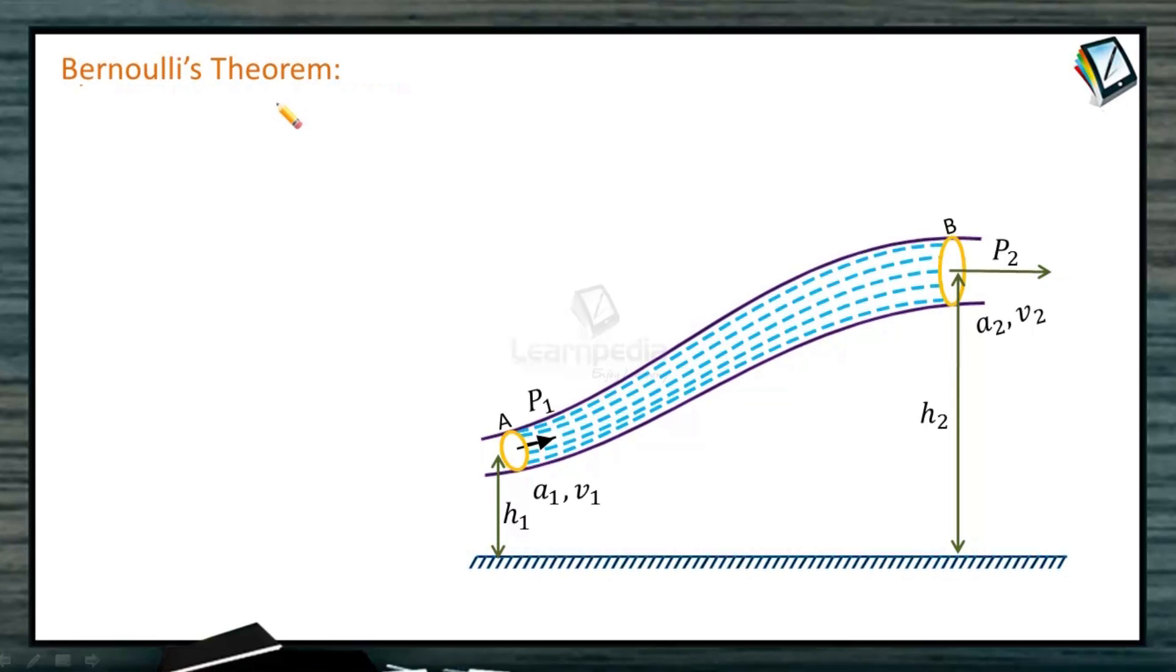Pressure at this point is P2. Bernoulli's theorem states that the sum of pressure energy, kinetic energy, and potential energy per unit mass is always constant for an ideal, incompressible, non-viscous fluid moving in streamline flow.